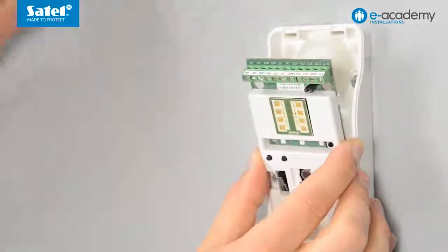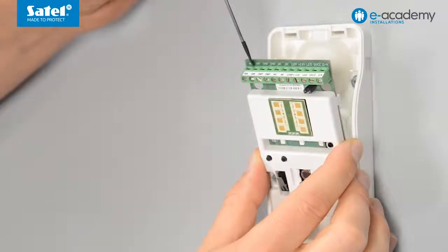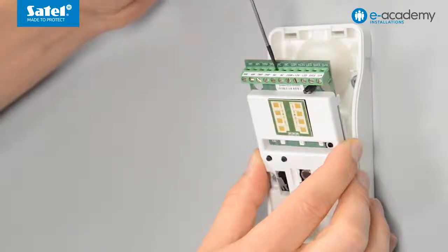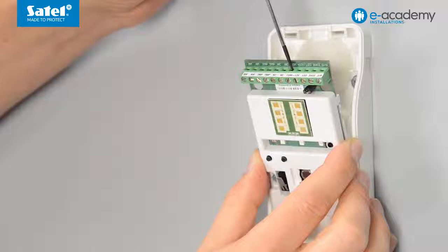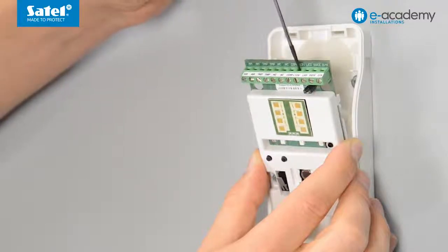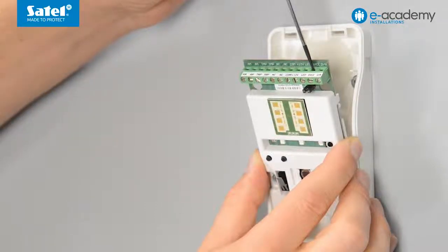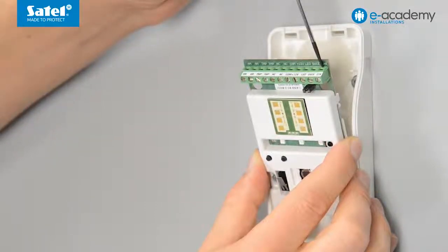There are the following terminals on the electronics board: two anti-masking outputs, two tamper outputs, two alarm outputs, common ground, power inputs, LED on/off, programming mode on/off, and dusk sensor output.